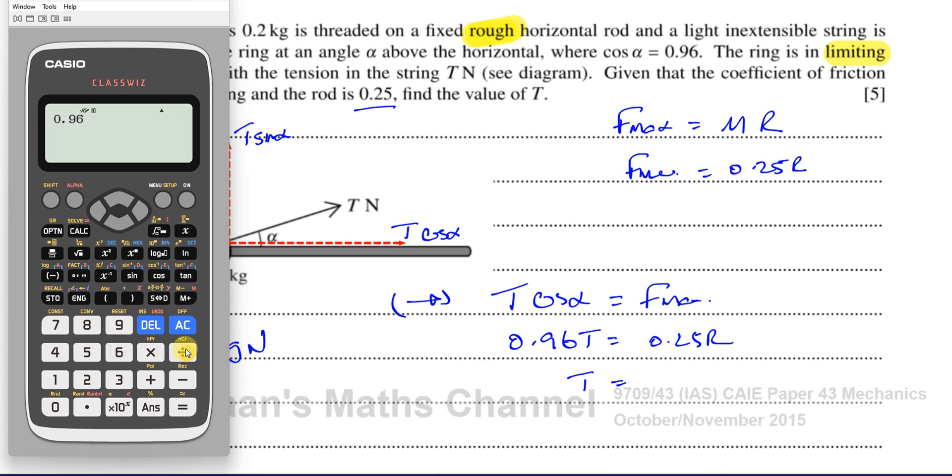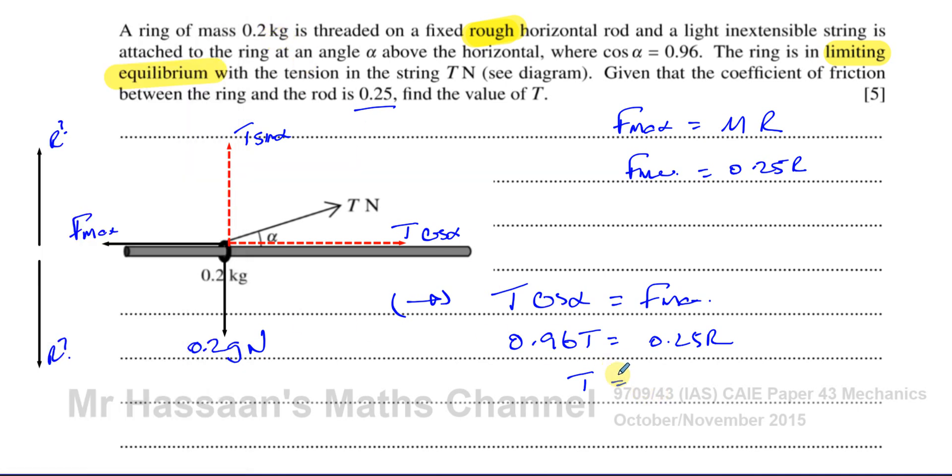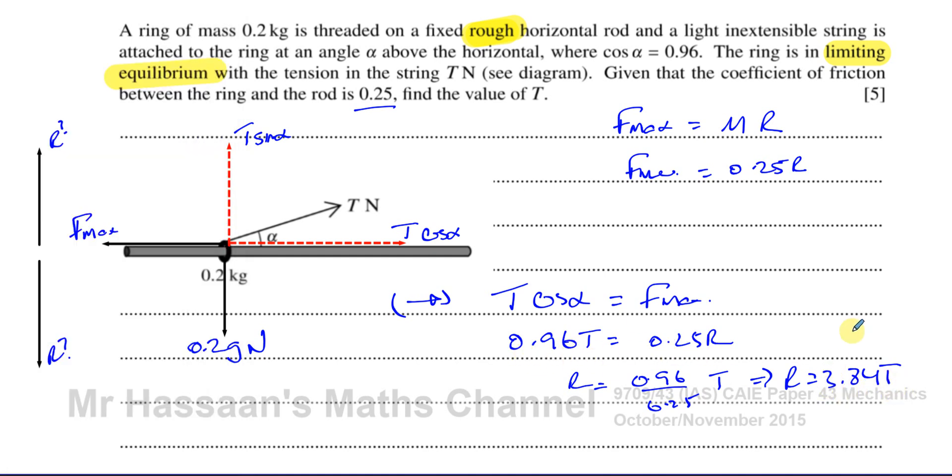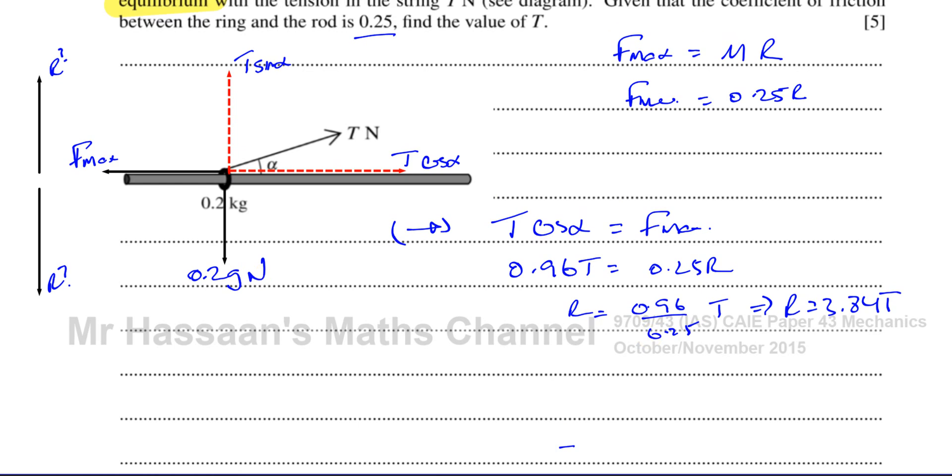What about 0.96 divided by 0.25? I'll write r in terms of T, so r is 3.84 T. I can say r is going to be 0.96 over 0.25 times T. Therefore, we can say r equals 3.84 times T. I just divided both sides by 0.25, so r equals 3.84 T. I know the value of r, whether it's positive or negative we're going to work out in a minute.